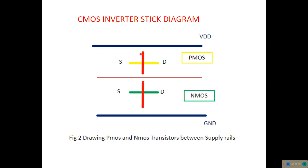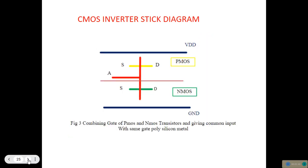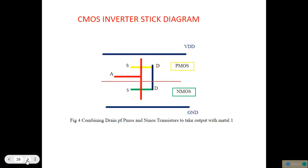This polysilicon material functions as the gate terminal. This is source and drain of the P-MOS transistor. Similarly, this is source and drain of your N-MOS transistor. We have drawn the transistors. Then we have to make the input connection. The gate of P-MOS and N-MOS are drawn in the form of polysilicon, from where we are going to apply the input A. The drain of both P-MOS and N-MOS has to be connected together and connected to the output.